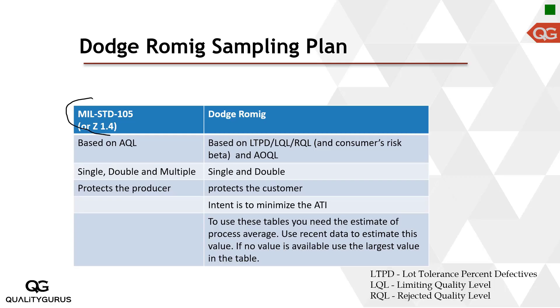So far in this course, all the tables we were looking at were from MIL STD 105, which is equivalent to Z1.4, the NCASQ standard Z1.4. Now we are looking at another set of tables, which is the Dodge-Romig tables. This is different from Z1.4.